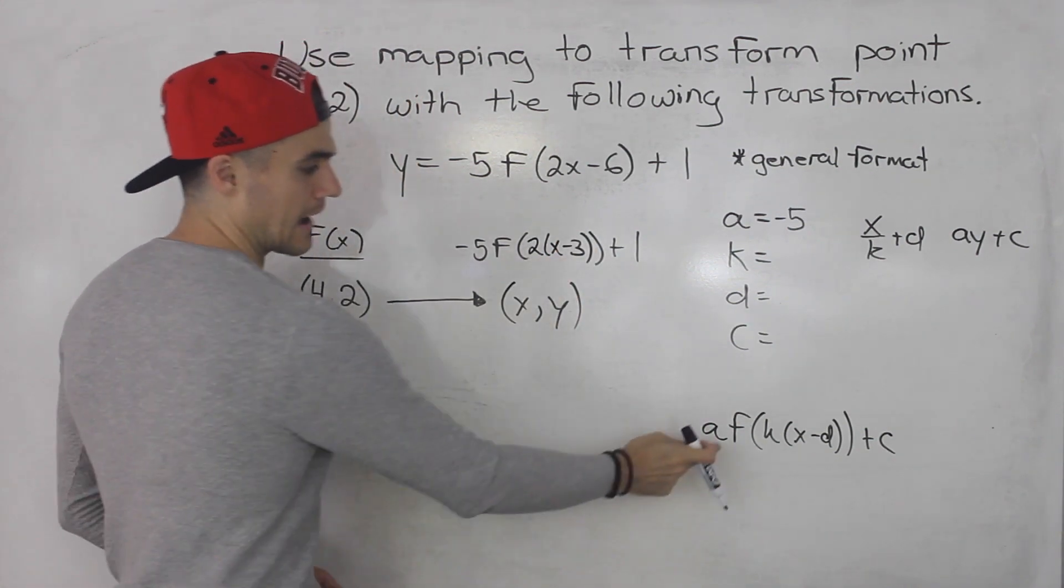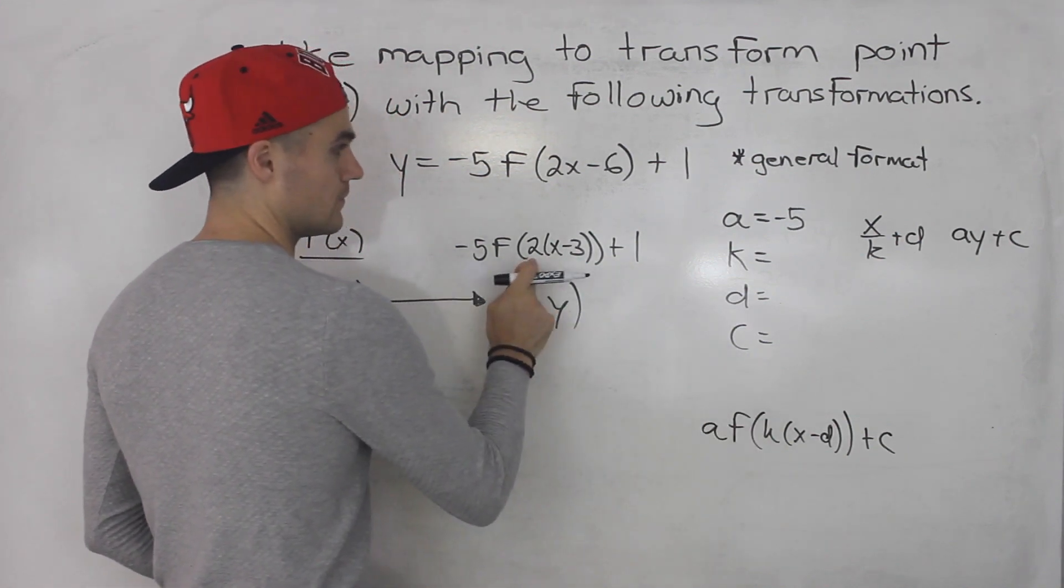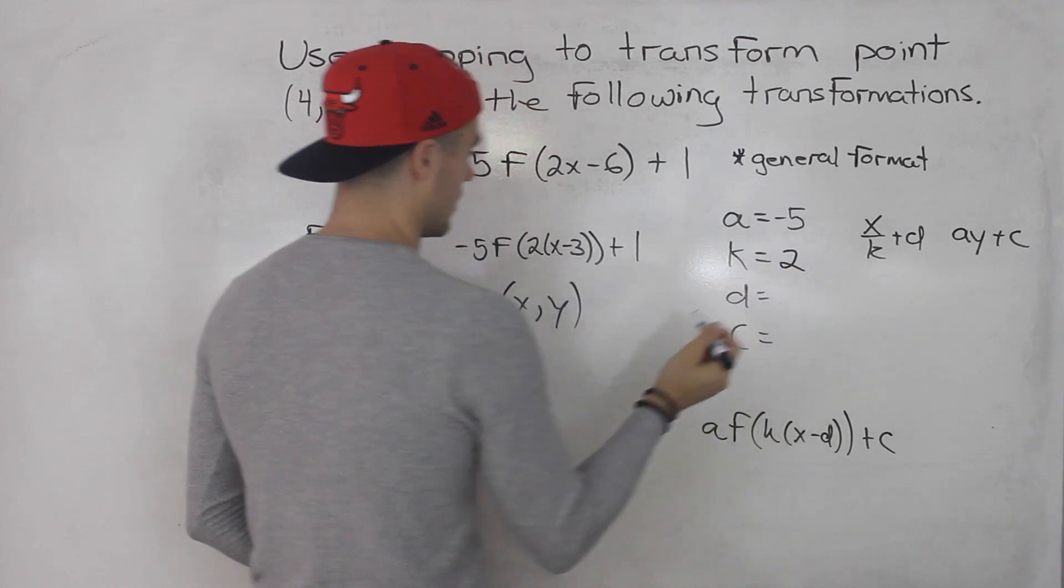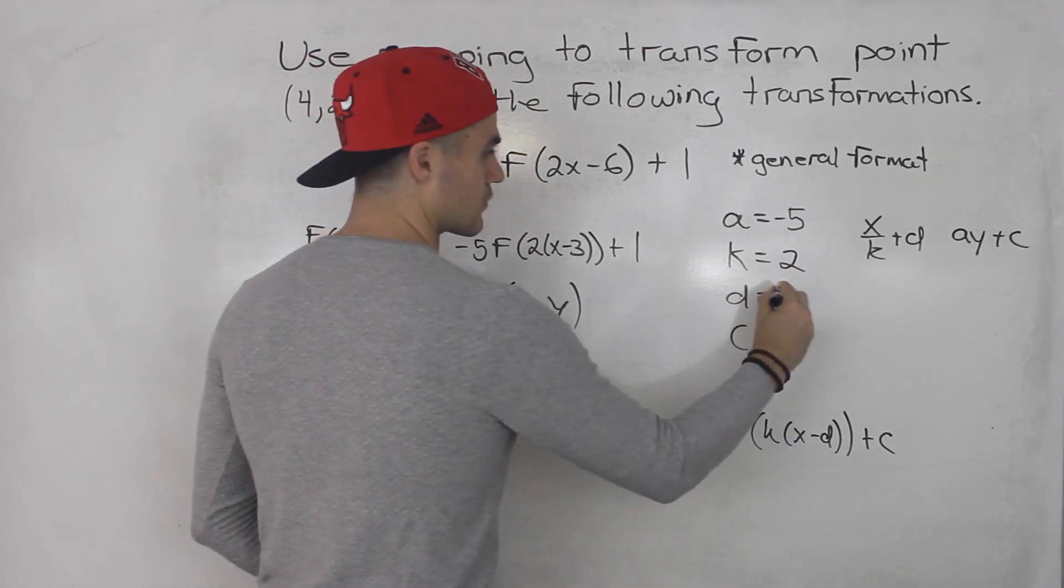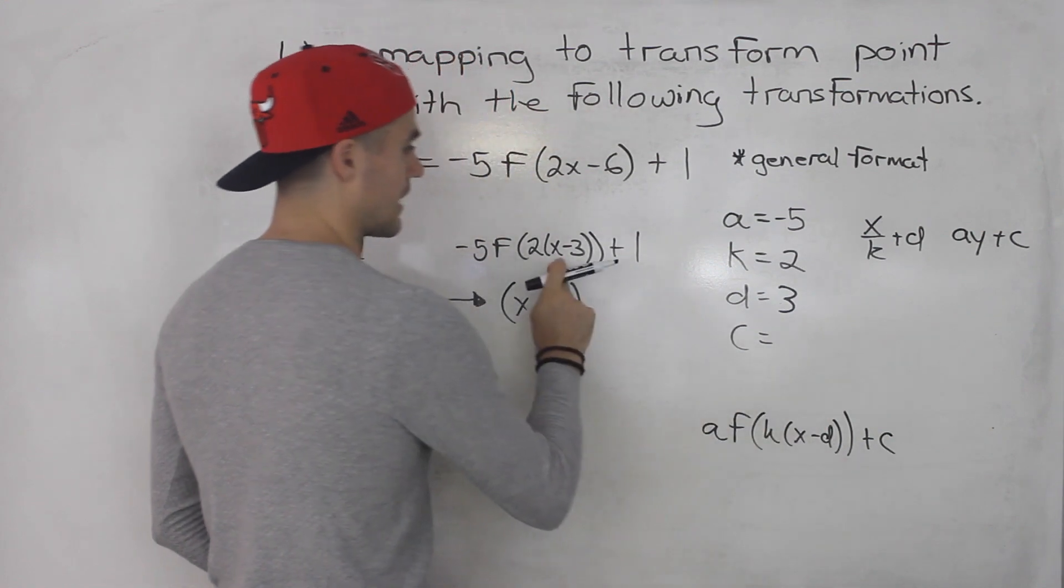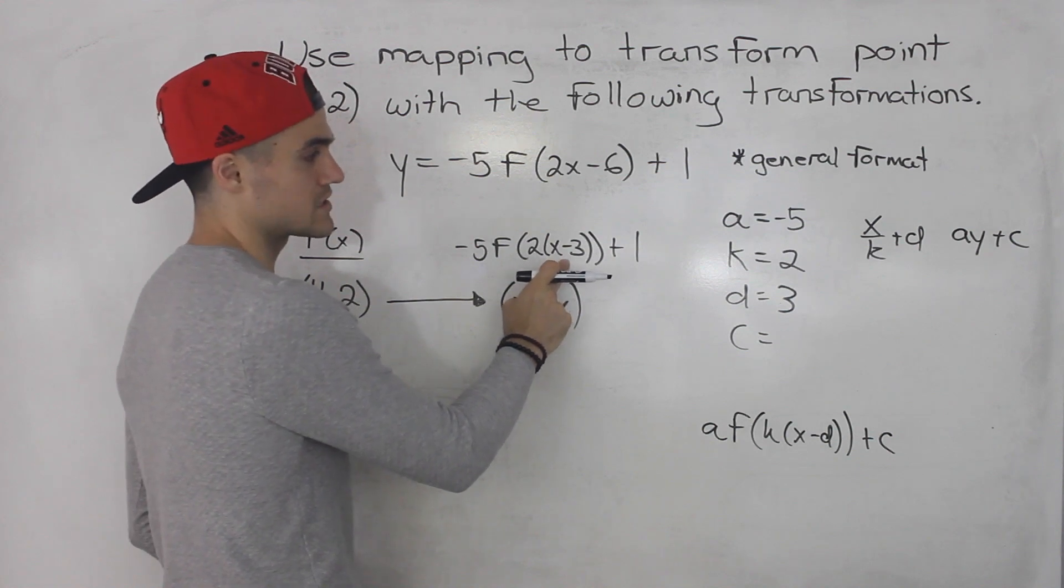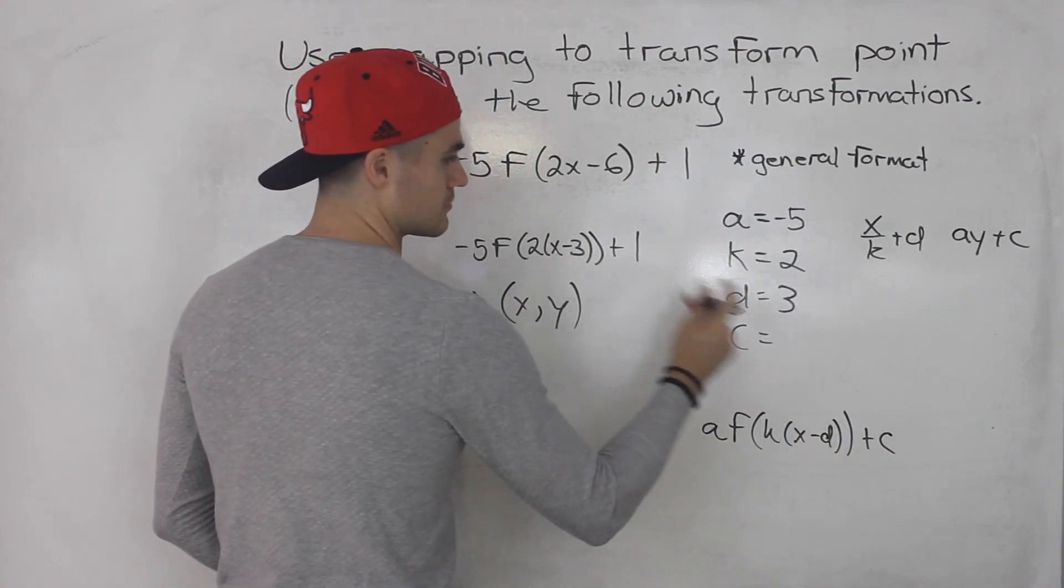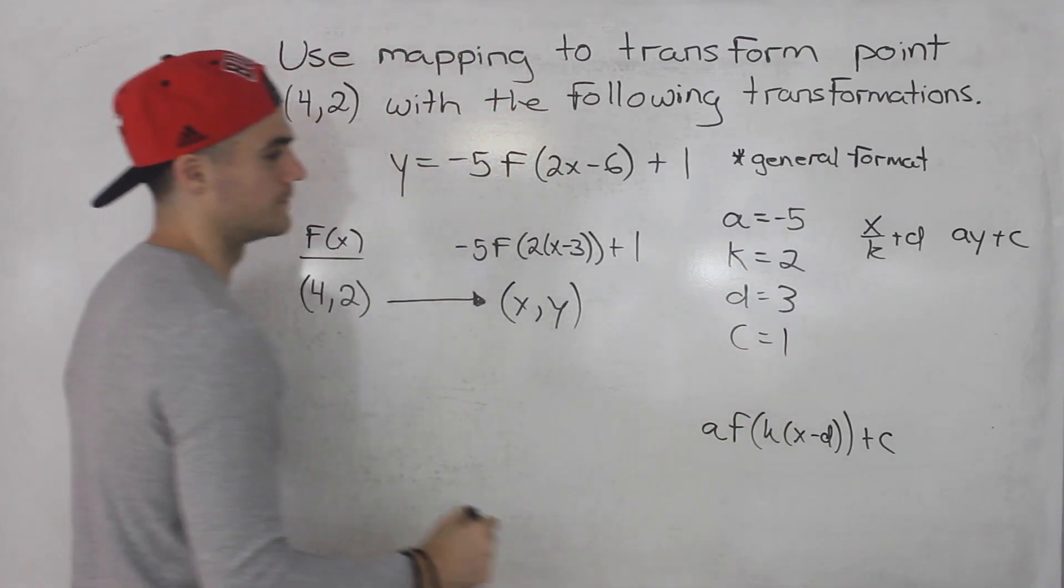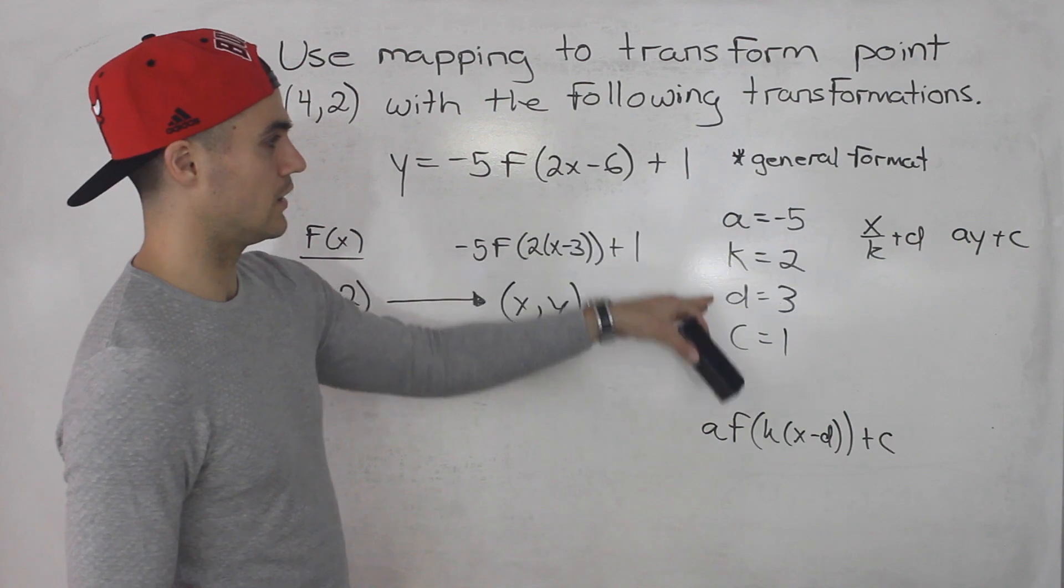So the a value we know is negative 5. The k value is 2. The d value is what? 3, positive 3, because it's x minus d, x minus 3, so the d value is 3. It's always the opposite sign of what's here, so notice it's positive. And then that c value is simply plus 1. So we have all the transformation values, and now we could plug in all of these into the formula.